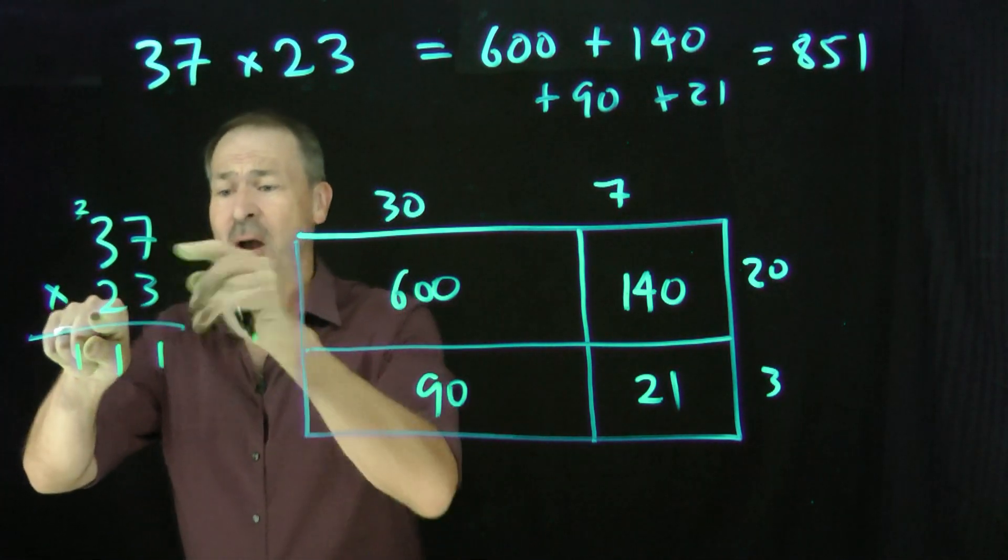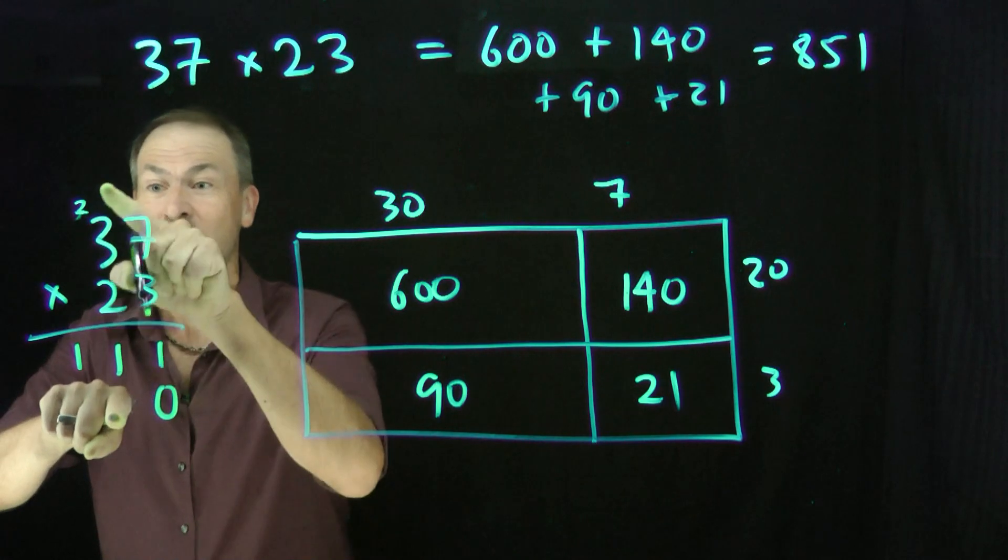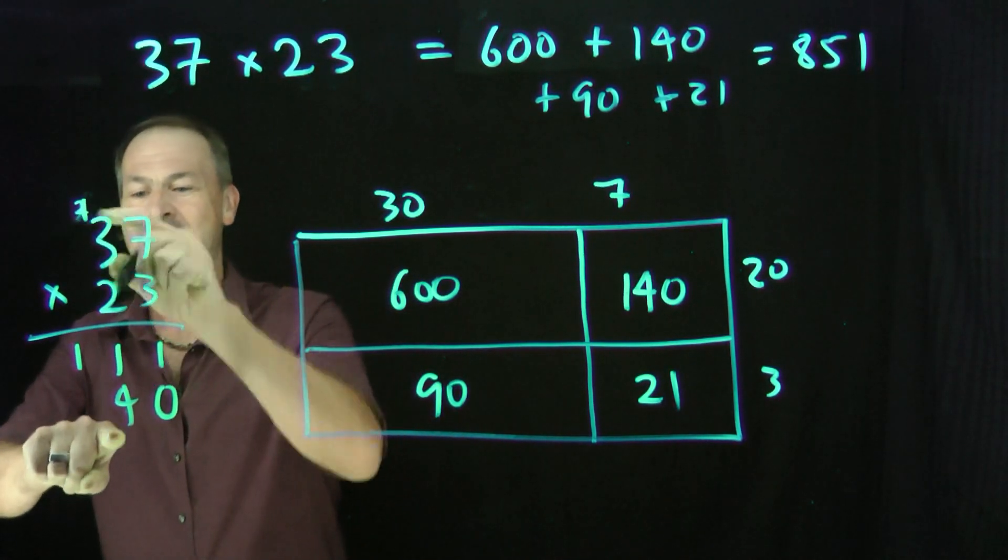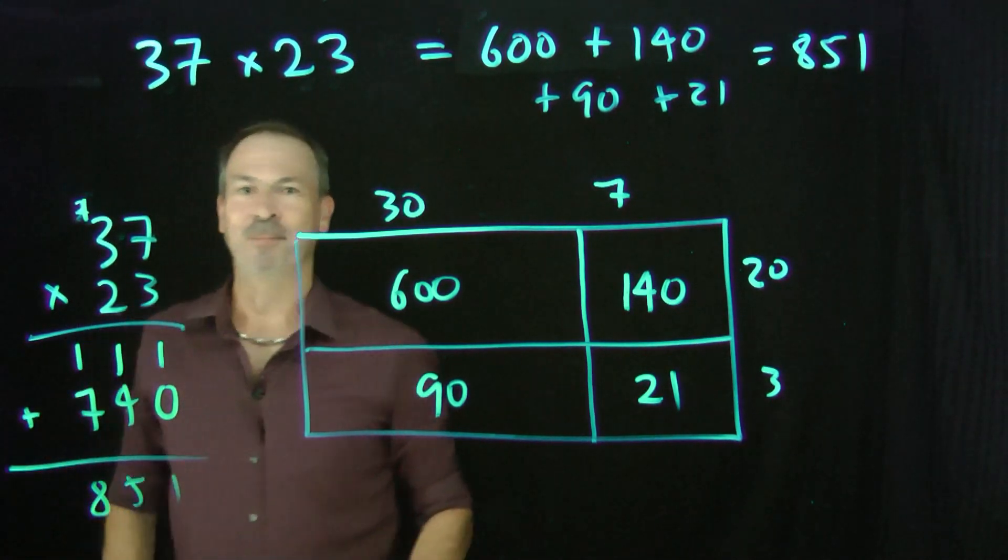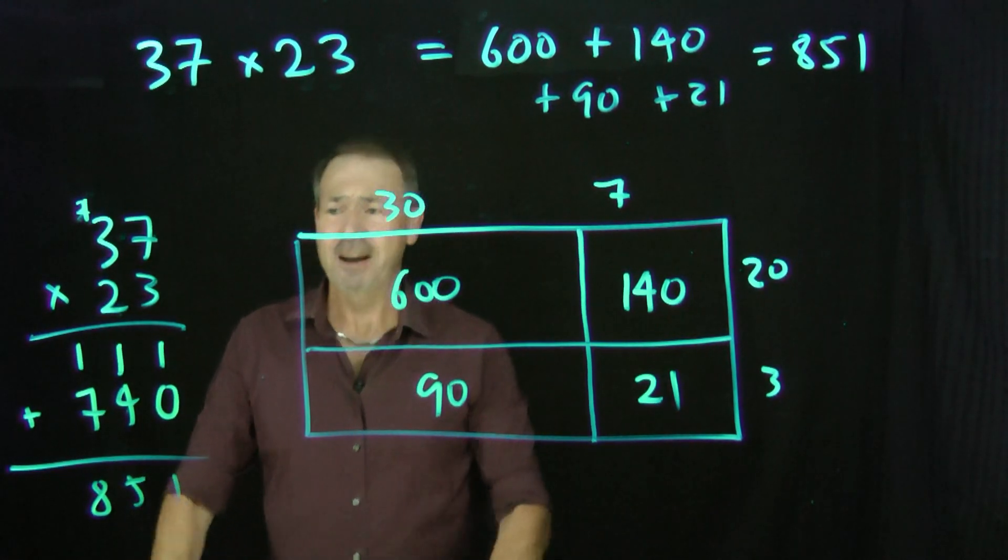Then put a 0 there and then do 2 times 7 is 14. I want to write 14 there. No, no, no. Don't write 14. Just write a 4 there with a 1 up there. Then 2 times 3 is 6. Add a 1 is 7. Now add up those pieces. I can see here we get 851. That's very strange.